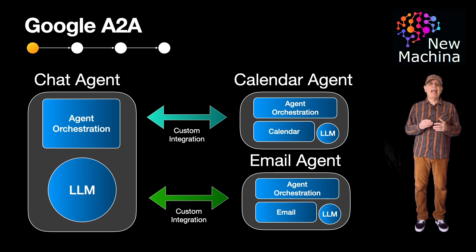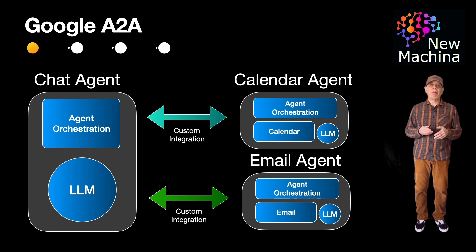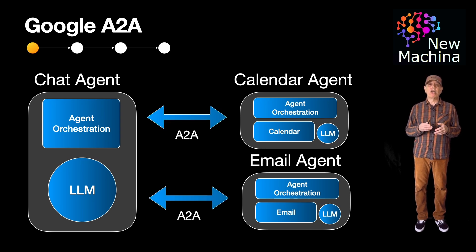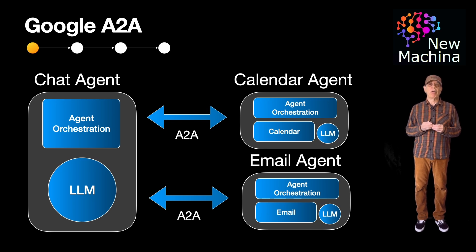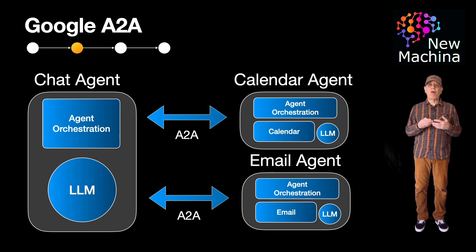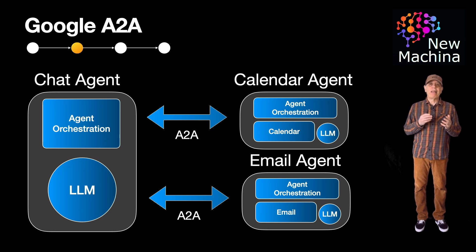So how does A to A attempt to solve this problem? A to A fixes this by giving agents a common way to describe what they can do and how to ask each other for help. It's kind of like giving every agent a resume and a phone number so they can find each other and work together without custom code.